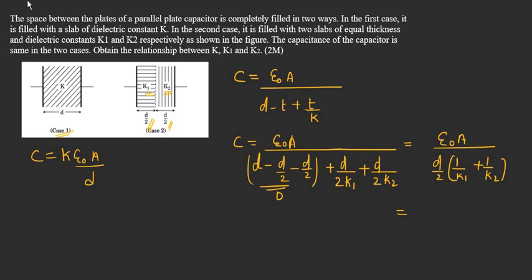If you take this two common numerator, you will be getting 2 epsilon 0 A divided by d into 1 by k1 plus 1 by k2.